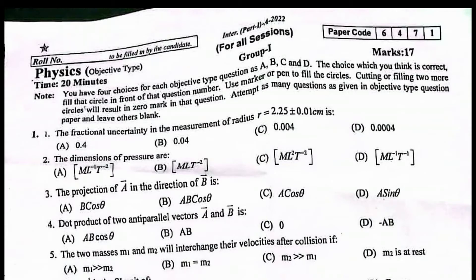The fractional uncertainty in the measurement of radius r equal to 2.25 plus minus 0.01 centimeter is 0.004. The dimensions of pressure are M L inverse T to the power minus 2. The projection of A in the direction of B is A cos theta.